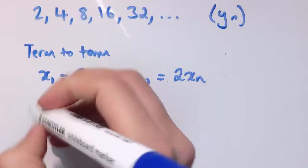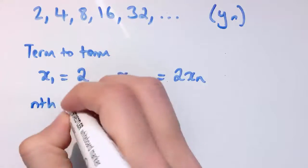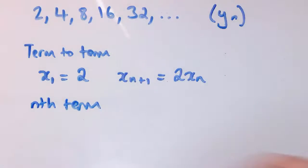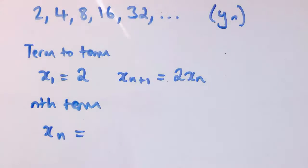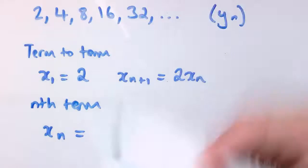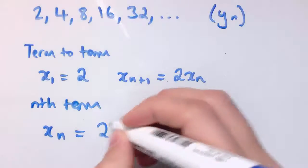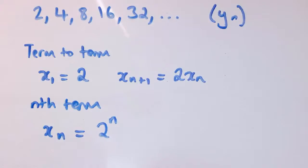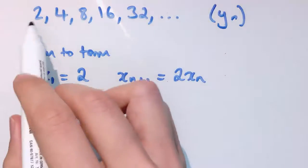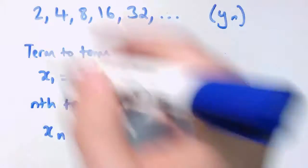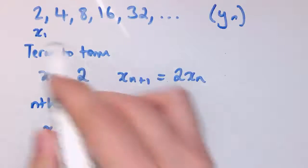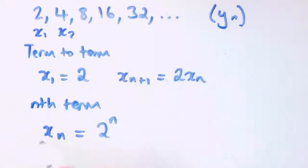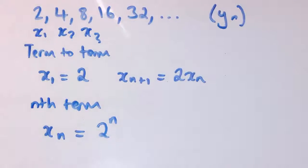For the nth term definition of this doubling sequence, it's really 2 to the power of something. It works out nicely: xn equals 2 to the power of n. When n equals 1 for the first term, 2 to the 1 is 2. x2 gives 2 to the 2 is 4. x3 gives 2 to the 3 is 8. That works for the nth term definition.